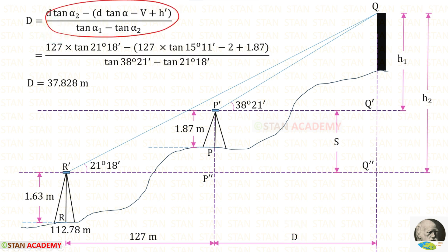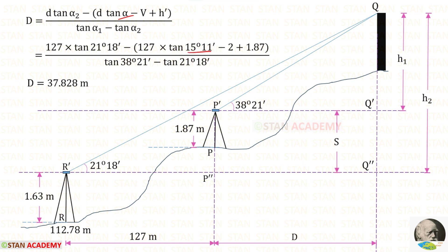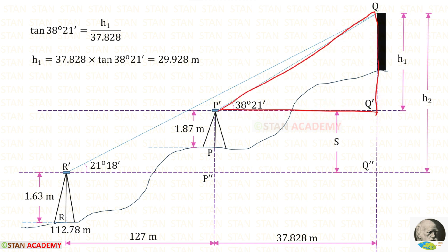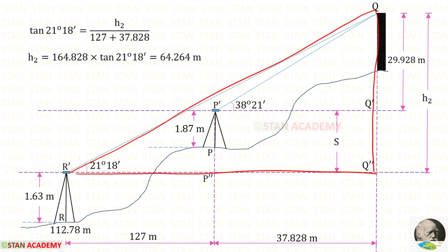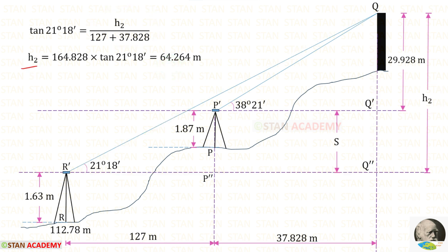Using the formula we can find the distance D. Alpha 2 is 21 degrees 18 minutes, alpha is 15 degrees 11 minutes, the height of the vane v is 2 metres, H dash (height of instrument at P) is 1.87 metres, and alpha 1 is 38 degrees 21 minutes. For D we get 37.828 metres. Then from the first triangle, tan 38 degrees 21 minutes equals H1 upon 37.828, giving H1 equals 29.928 metres. From the big triangle, tan 21 degrees 18 minutes equals H2 upon (127 plus 37.828), giving H2 equals 64.264 metres.